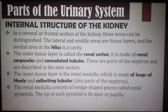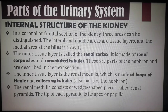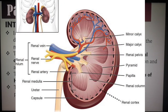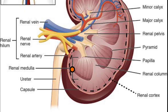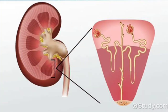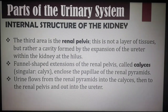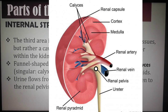In a coronal or frontal section of the kidney, three areas can be distinguished. The outer tissue layer is called the renal cortex, made of renal corpuscles and convoluted tubules. The inner tissue layer is the renal medulla, made of loops of Henle and collecting tubules, consisting of wedge-shaped pieces called renal pyramids. The tip of each pyramid is its apex or papilla. The third area is the renal pelvis — a cavity formed by expansion of the ureter within the kidney. Funnel-shaped extensions called calices include the papillae, and urine flows from the renal pyramids into the calices, then to the renal pelvis, and out into the ureter.